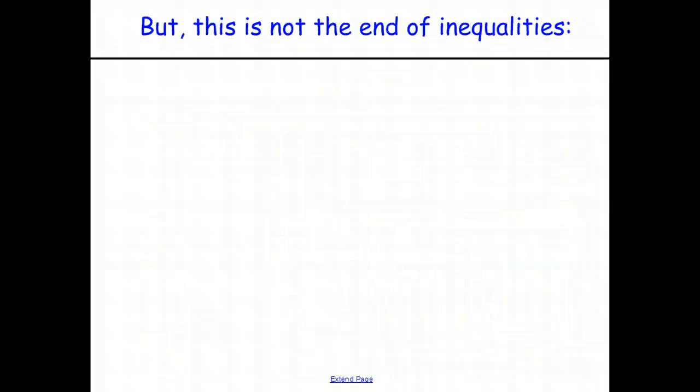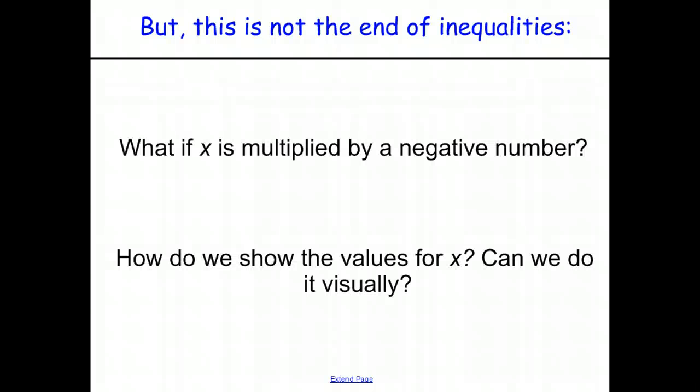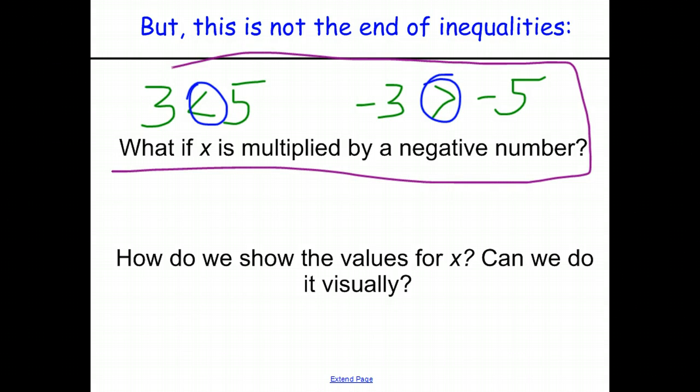But one of the cool things about inequalities is that even though we've now gone through everything that we talked about with an equation, that's still not quite the end of inequalities. There's a few other things to consider like, what if x is multiplied by a negative number? Because, if you think about it, where 3 is less than 5 in the positive numbers, negative 3 is actually greater than negative 5. And so, when the numbers flip from positive to negative, this inequality, in order to make it true, needs to flip too. So, what is that going to tell us about what if we have to multiply or divide by a negative number to solve our inequality? Are we concerned by this flip of sign here? Maybe we aren't, maybe we are.